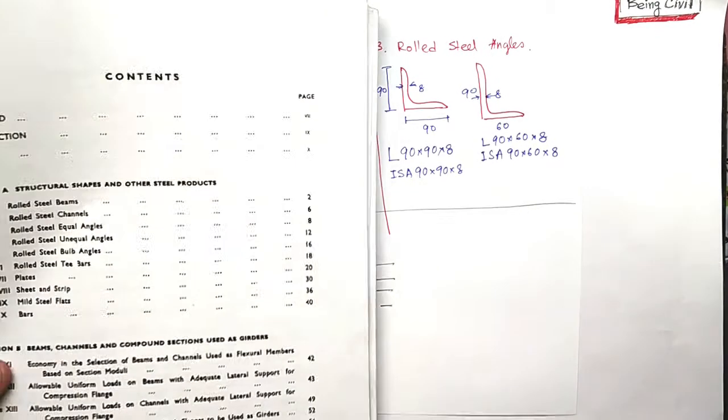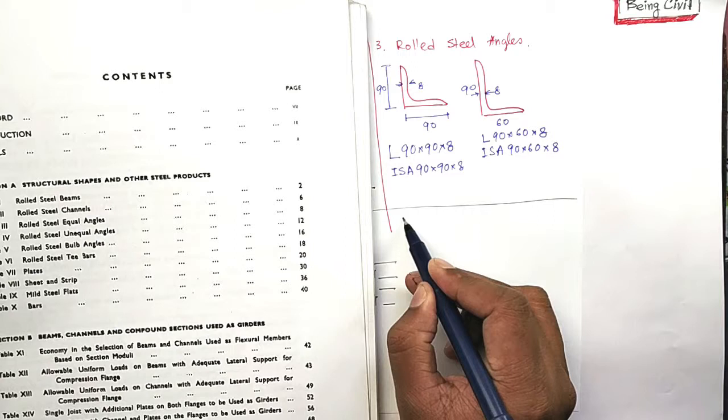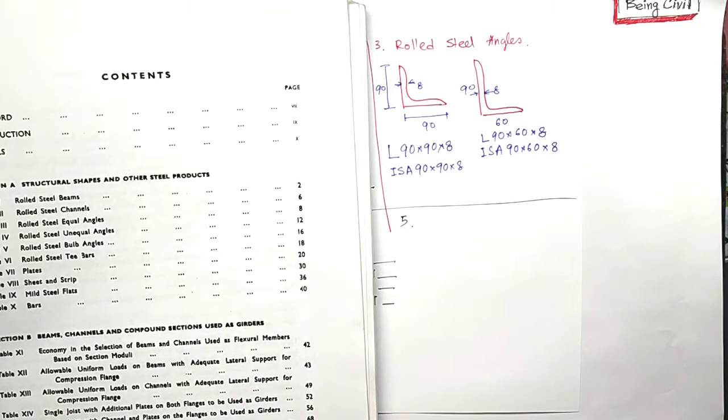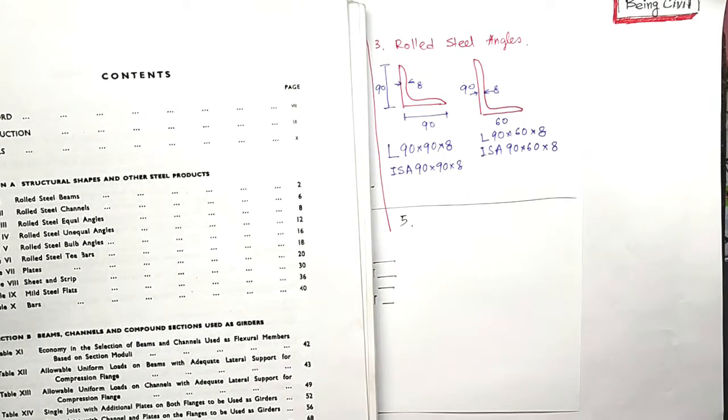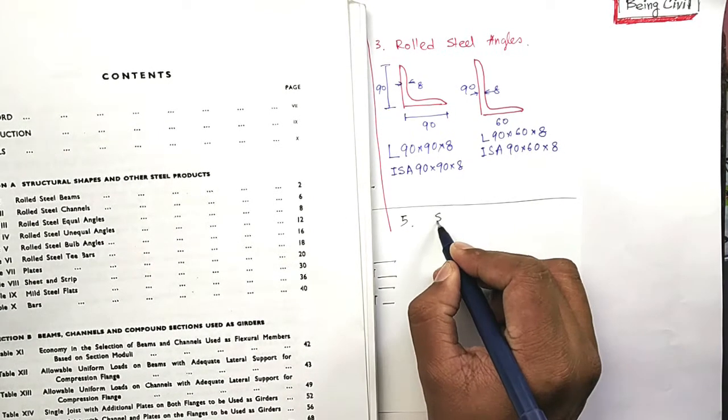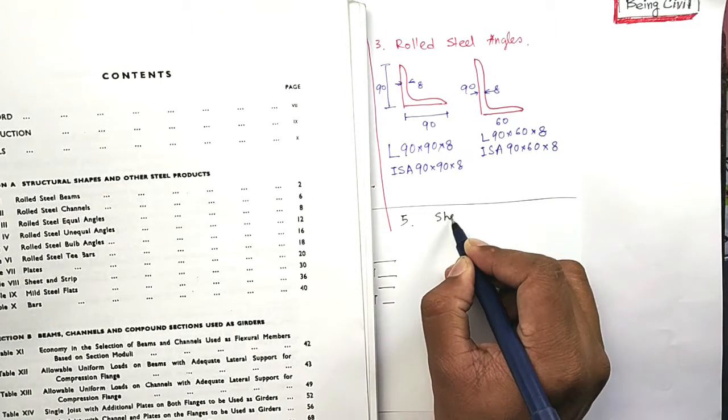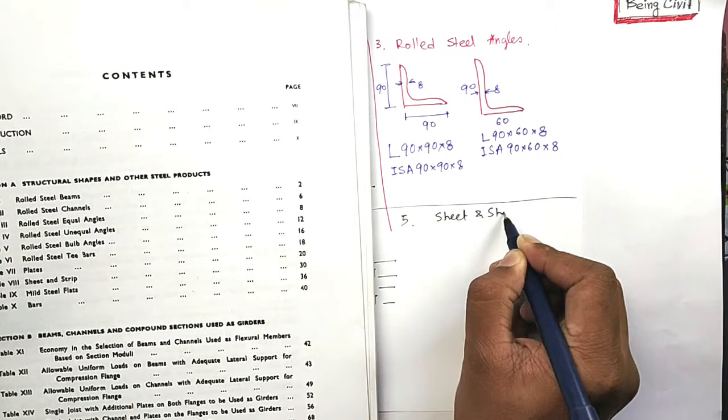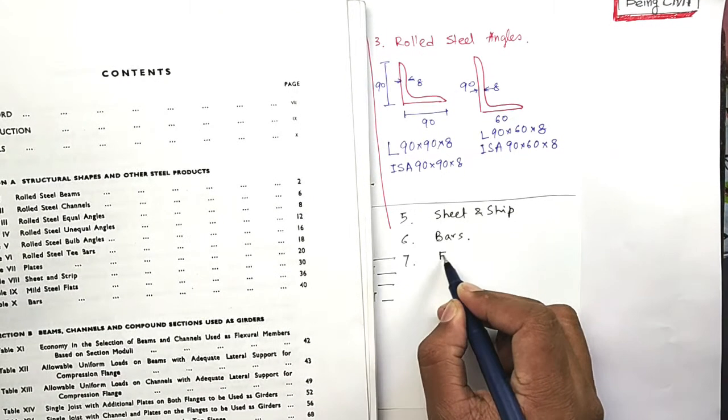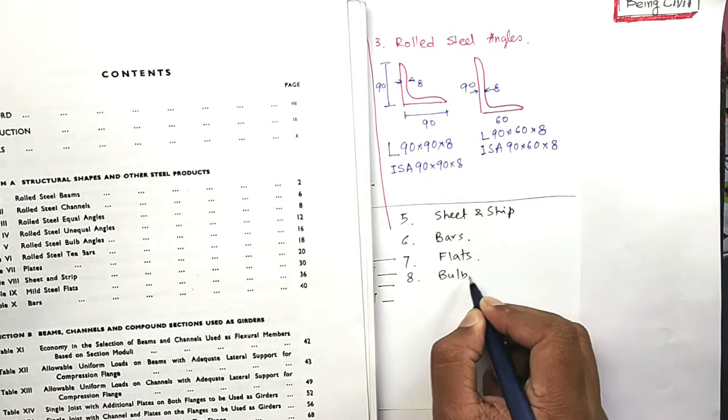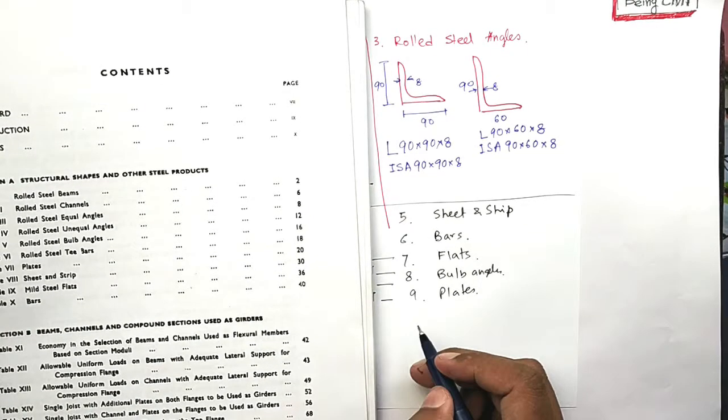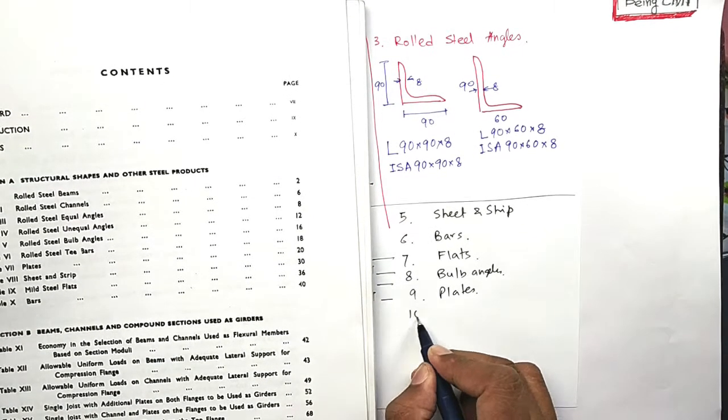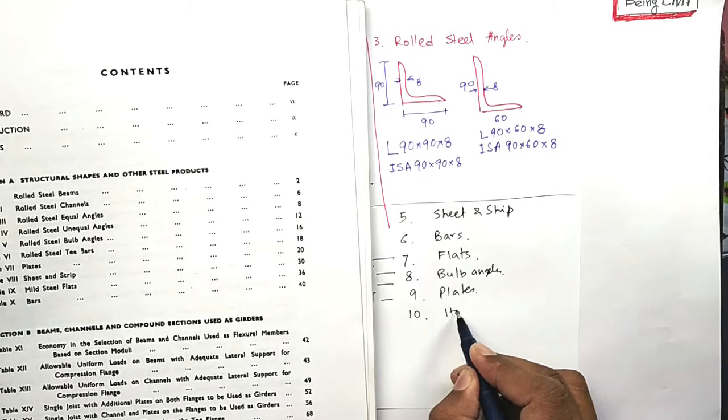There are other types of rolled steel sections. I am not going into detail. Have a look from the SP 6. There are sheet and strip, steel bars, steel flats, bulb angles, plates. And there is an important type, it is hollow section.